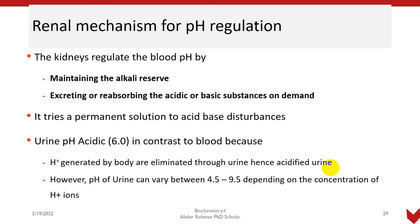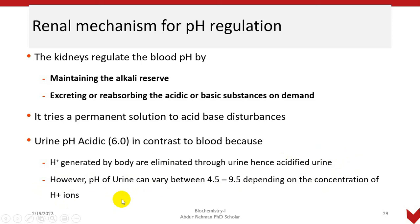The normal blood pH is 7.34, which is slightly alkaline. The reason is that excess hydrogen ions are excreted out through the renal pathway — through the nephrons of the kidney — which is why urine is normally acidic. However, urine pH can vary between 4.5 and 9.5 depending on the concentration of hydrogen ions. It is mostly acidic under normal circumstances but can fluctuate.